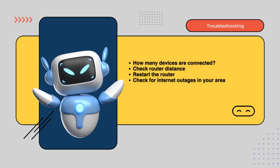Why is your internet running so slow today? Let's play detective. First, think about how many devices are connected. The more gadgets using the internet, the slower it can get. Another factor is your distance from the router. If you're far away, try moving closer for a better signal. Still sluggish? Maybe we should restart the router to refresh the connection.